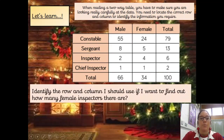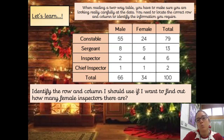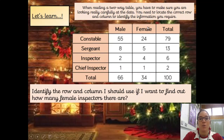Let's have a look. Identify the row and column I should use if I want to find out how many female inspectors there are. I would read the question carefully and identify 'female', which is in this column here. Then I'd look down the side to find 'inspector' — being careful because one says 'chief inspector', but we just want 'inspector'. As we can see, there are 4. We've highlighted the female column and the inspector row.